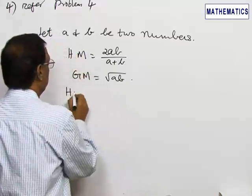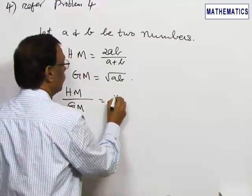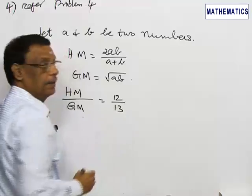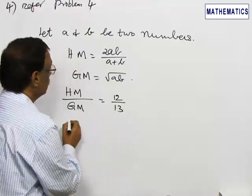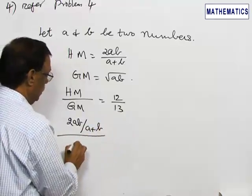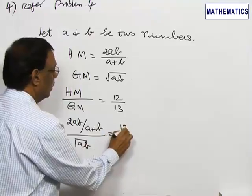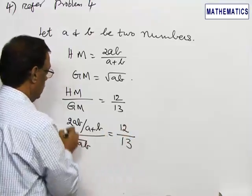So HM by GM is 12 by 13, which means 2AB by A plus B divided by root of AB is equal to 12 by 13.